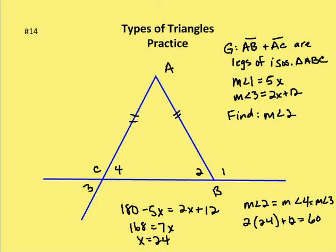Now since the measure of angle 2 equals the measure of angle 3, I can take the equation for the measure of angle 3 and plug in x equals 24. So I have 2 times 24 plus 12, which equals 60 degrees. So the measure of angle 2 is equal to 60 degrees.